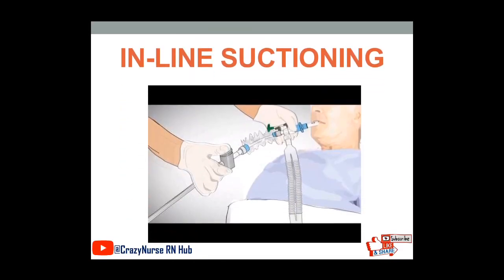This is an example of inline suctioning. We have the endotracheal tube and the corrugated tube going to the mechanical ventilator, and at the distal end of the endotracheal tube, you have your suction tip already attached to the ET tube. The nurse will just press the suction valve in order to suction the secretions from the patient, without manually introducing the suction tip into the endotracheal tube — it is built in.